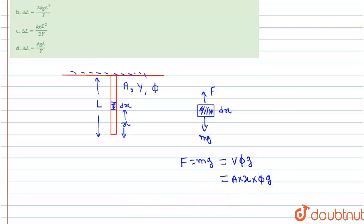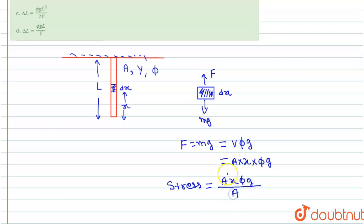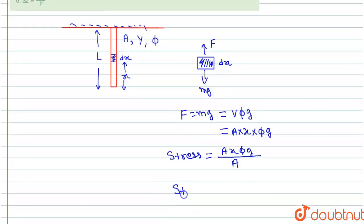Now, as we know, stress equals force divided by area. So stress equals A·x·φ·g divided by A. The A cancels out, giving us stress equals x·φ·g, where x is the distance from the bottom.